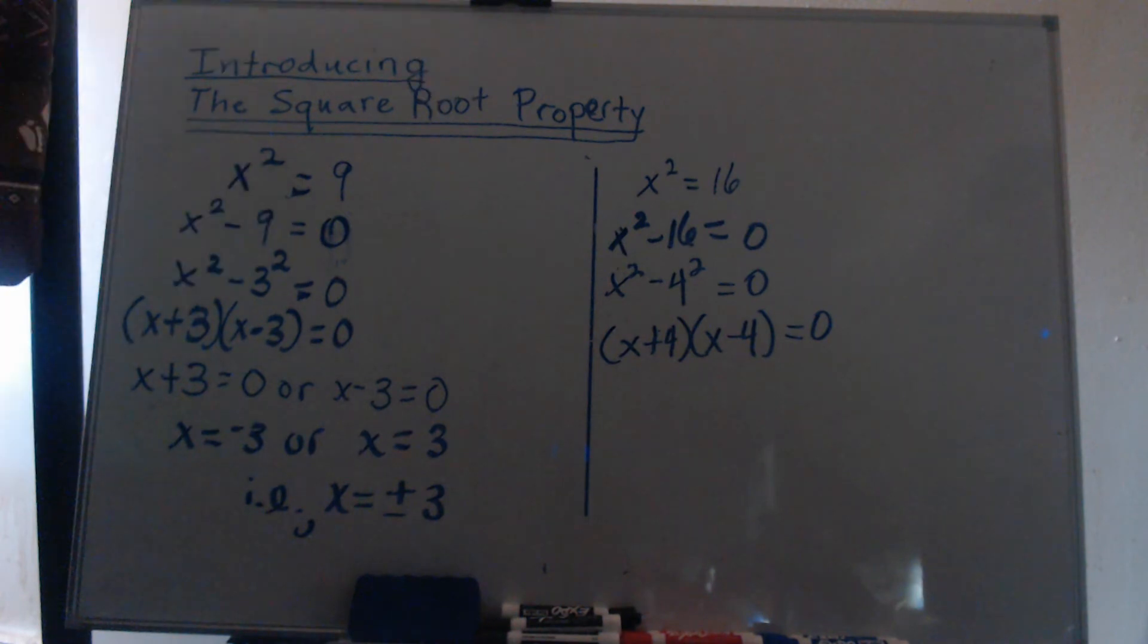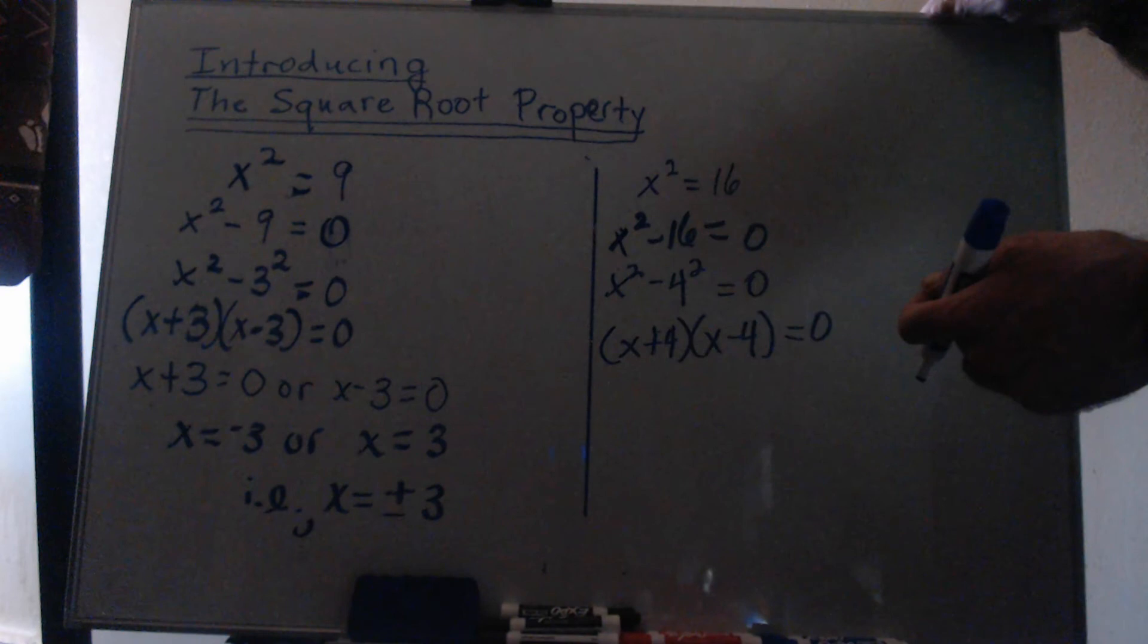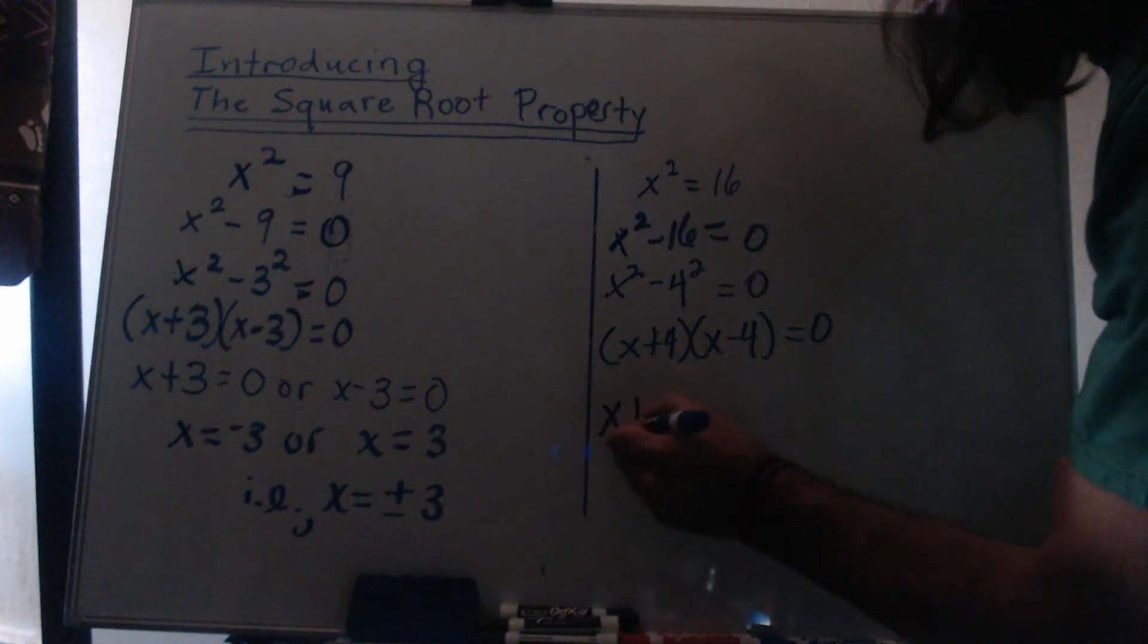Same thing's going to happen on the other one. We're going to get two solutions that are the same size, but opposite in sign, i.e., they're the same absolute value, and both of those will check.